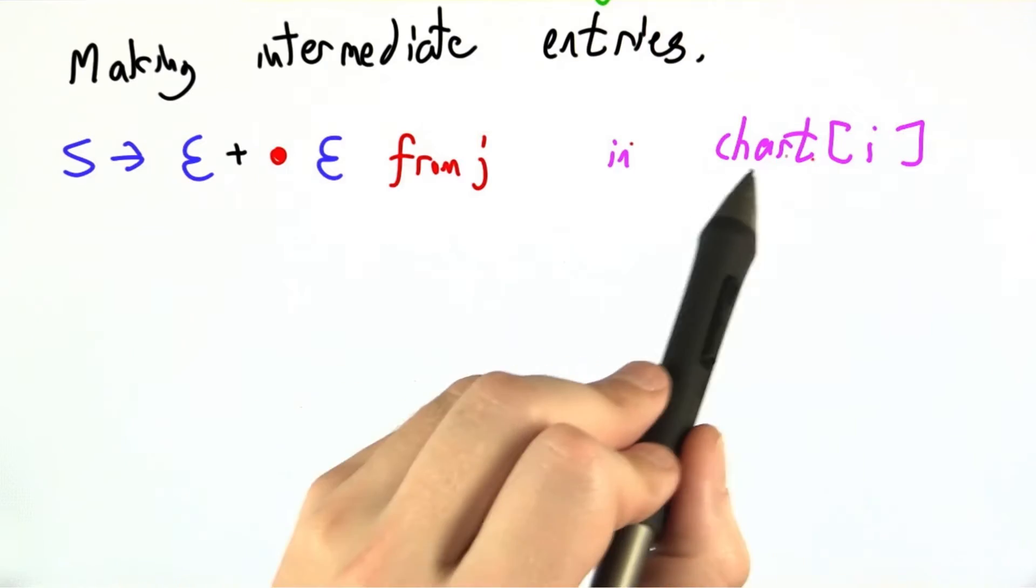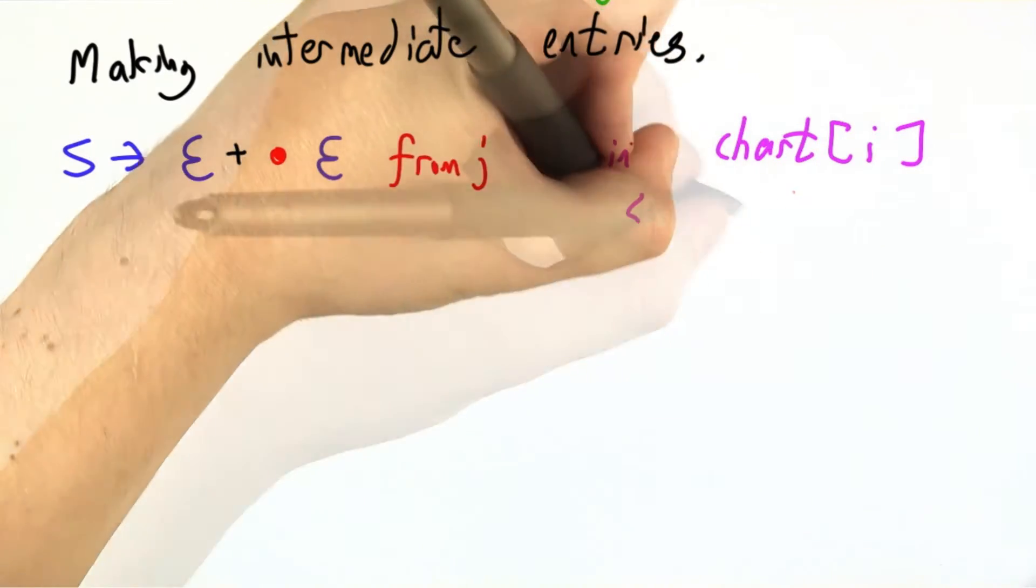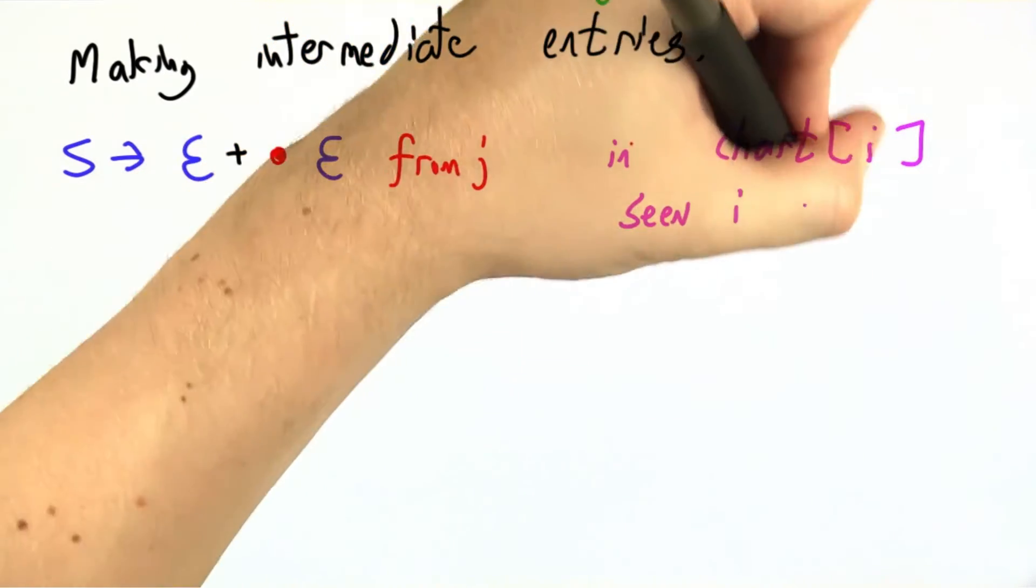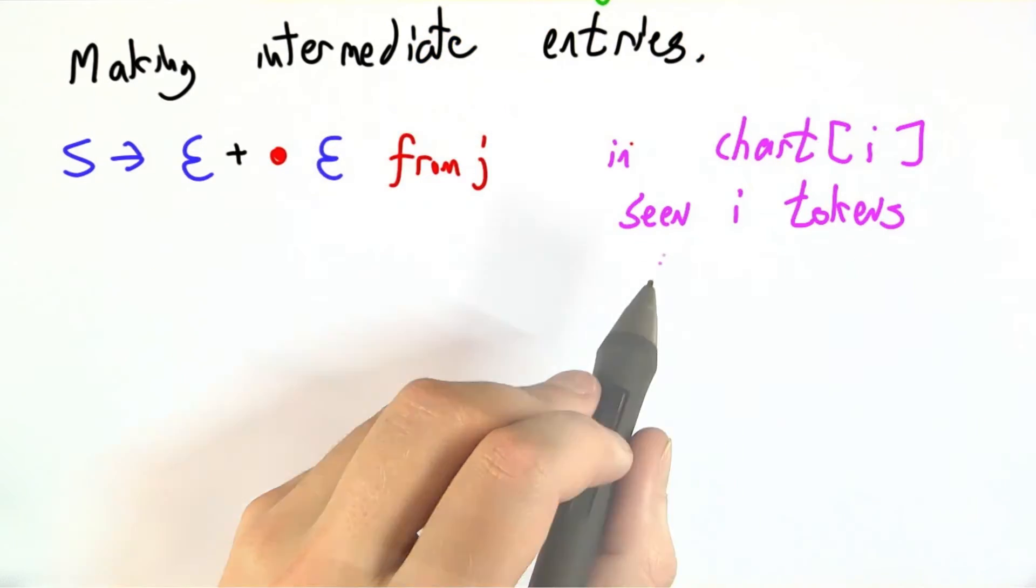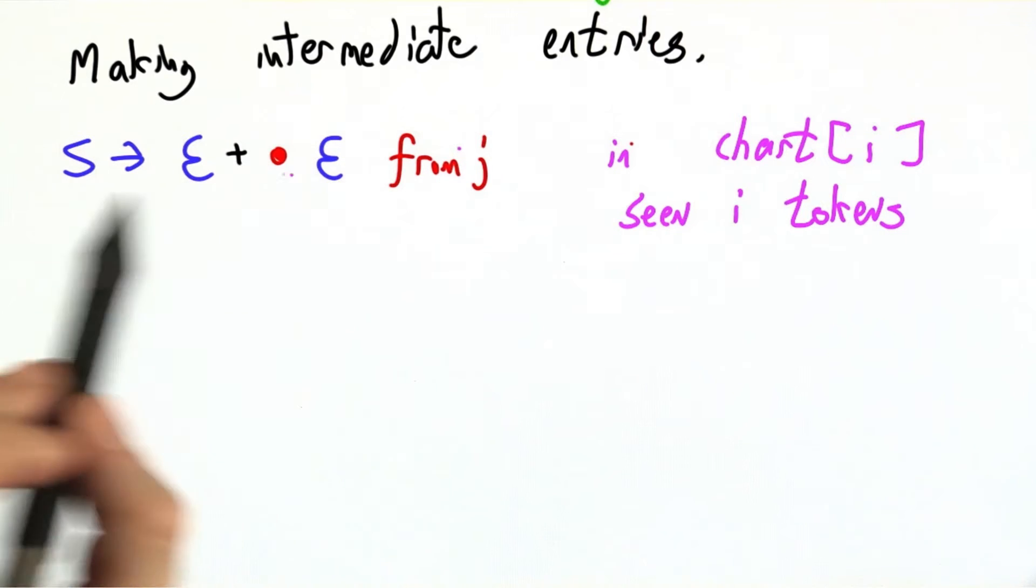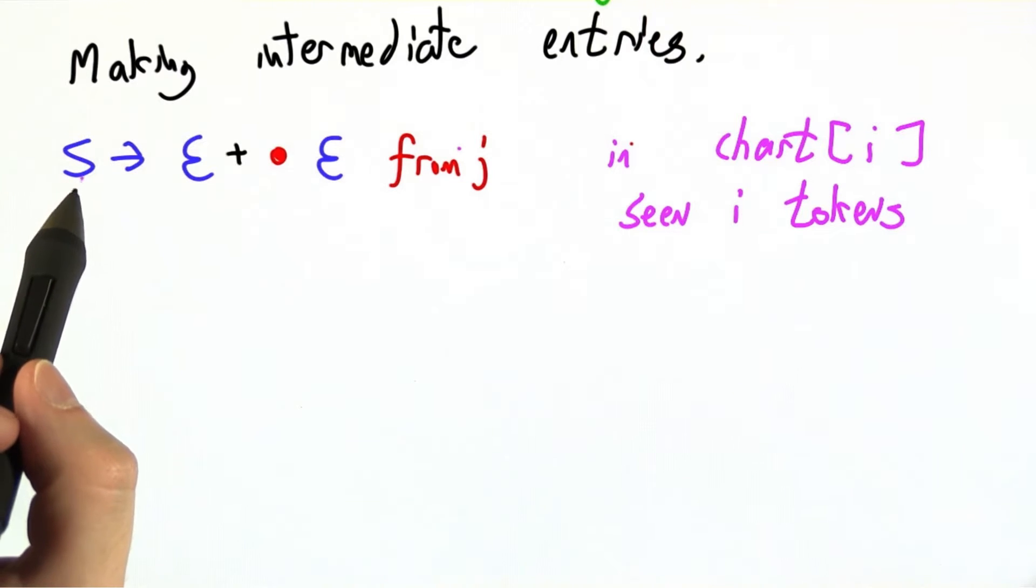Let's say that we're looking at chart position I. This means we've seen I tokens in the input, and one of the things currently in that chart is the following parse state.